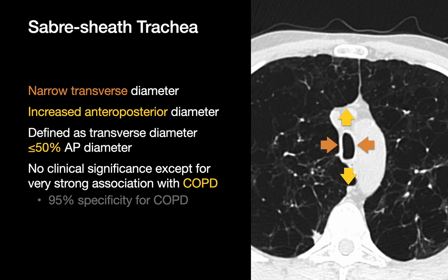Saber-sheath trachea has a morphology where the trachea's transverse diameter narrows while the AP diameter increases, so instead of a relatively round cross-section, the cross-section becomes a thin oval — reminiscent of the sheath that a sword or saber would fit into. It is technically defined as a situation where the transverse diameter is 50% or less of the AP diameter. This morphology alone has no clinical significance but has a very strong association with COPD.